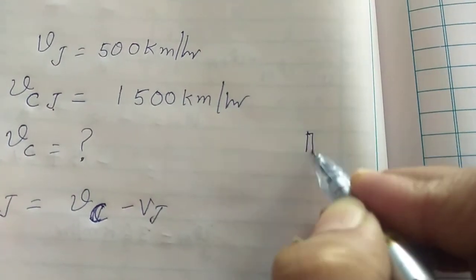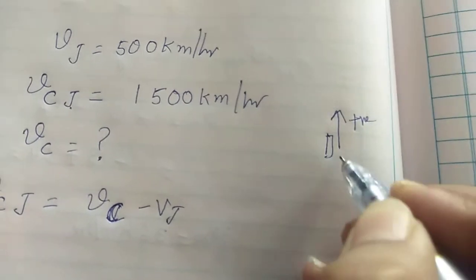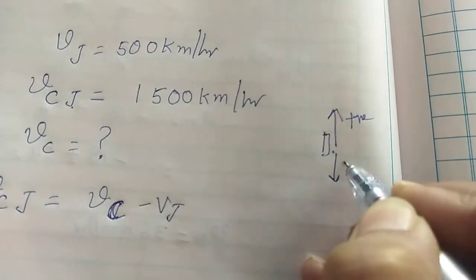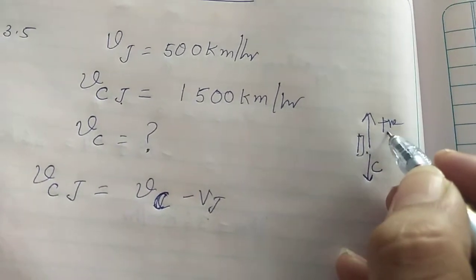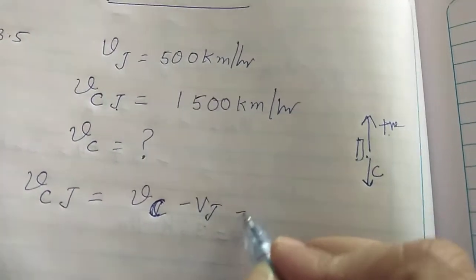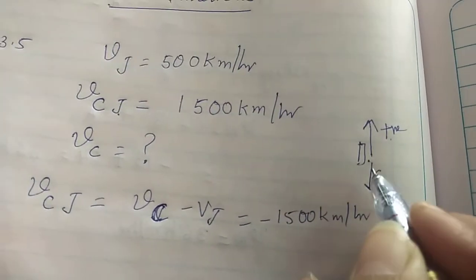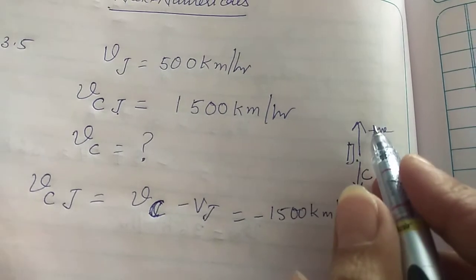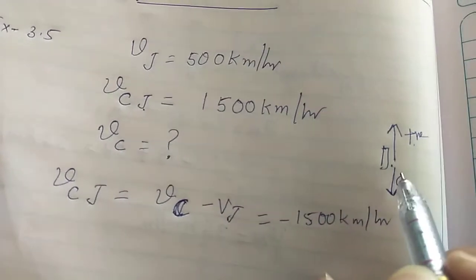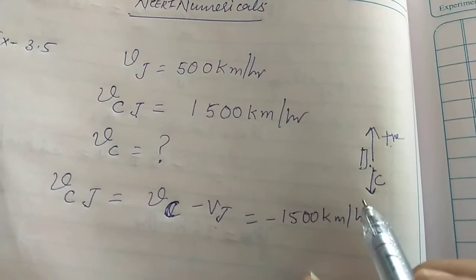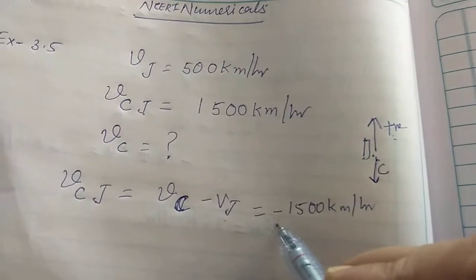The jet airplane is moving upward, so we consider the upward direction as positive. The combustion products are going downward, so their velocity with respect to the jet plane is taken as minus 1500 km per hour. Since they move in the downward direction and we have considered upward as positive, we place a minus sign.